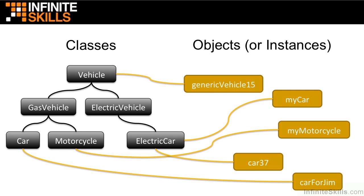As you can see, object oriented programming is very intuitive. We are logically modeling real-world behavior in a way that makes sense to us. This is one of the reasons that object oriented programming has been so popular.